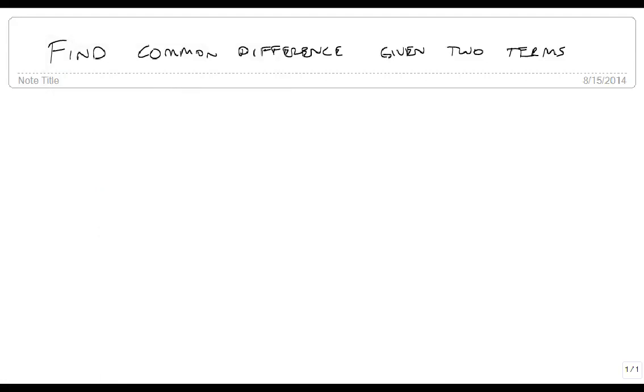We're going to talk about how we find the common difference if all we're given are two terms. So suppose we're told that the fourth term, let me just write it this way,